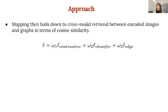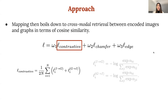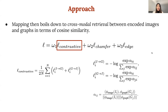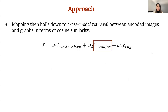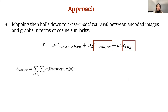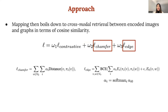Our loss function is defined with three parts. The contrastive loss penalizes all incorrect image-graph pairs equally, and is computed as a weighted combination of the image-to-graph loss and graph-to-image loss, averaged over all positive image-graph pairs in each mini-batch. The cosine similarity between image and graph is defined as alpha. We further compute the chamfer distance between each vertex and its closest match in terms of Euclidean distance between vertices. We also use a binary cross-entropy edge loss between the ground truth binary adjacency matrix E0 and the permuted matrix EI.